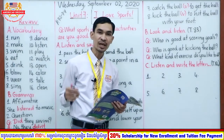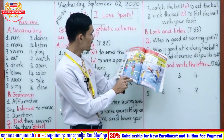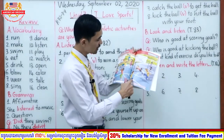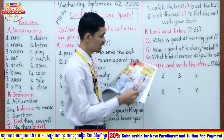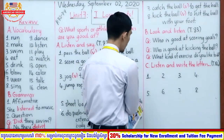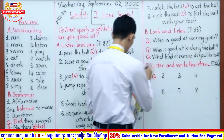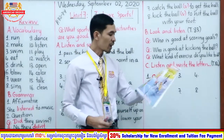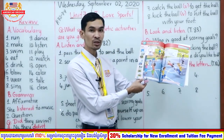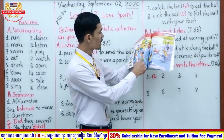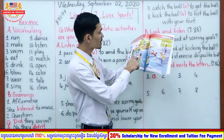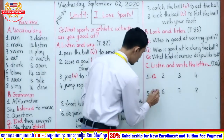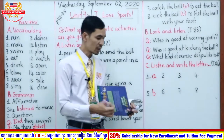Letter A goes to the word pass the ball. You see this boy passing the ball to Brian, right? Brian is the speaker in the listening. So letter A is pass the ball — that is number one. How about letter B? Letter B is shoot baskets. You see this boy shooting baskets, so you write letter B there. Shoot baskets is number five. So number five is letter B.